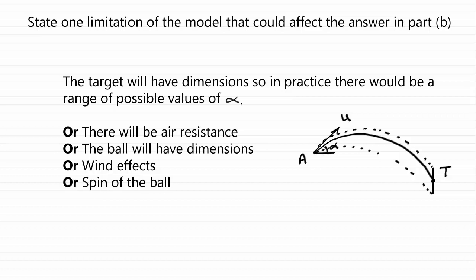So there we are. They're the limitations that examiners have written down in their mark scheme that could affect the answer then in part B.